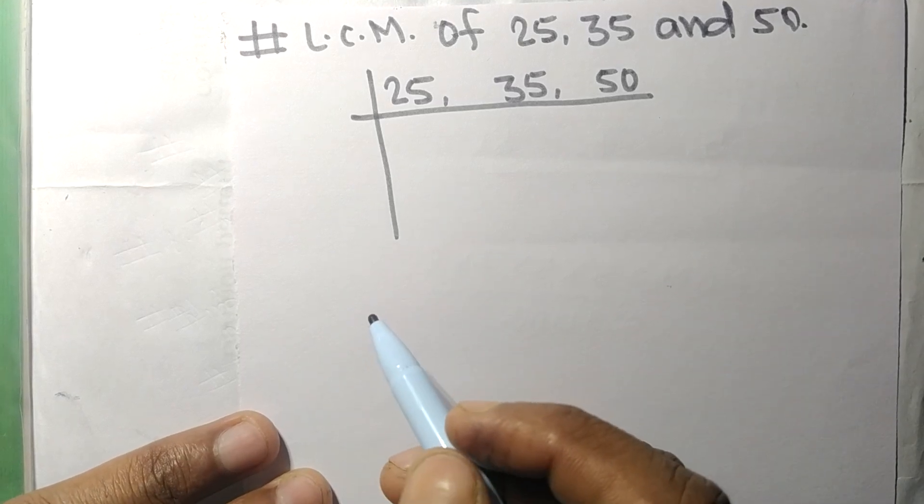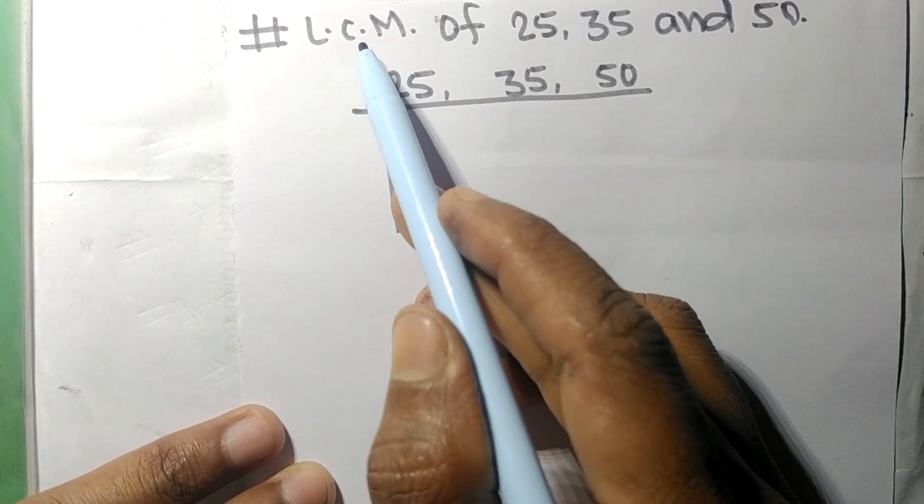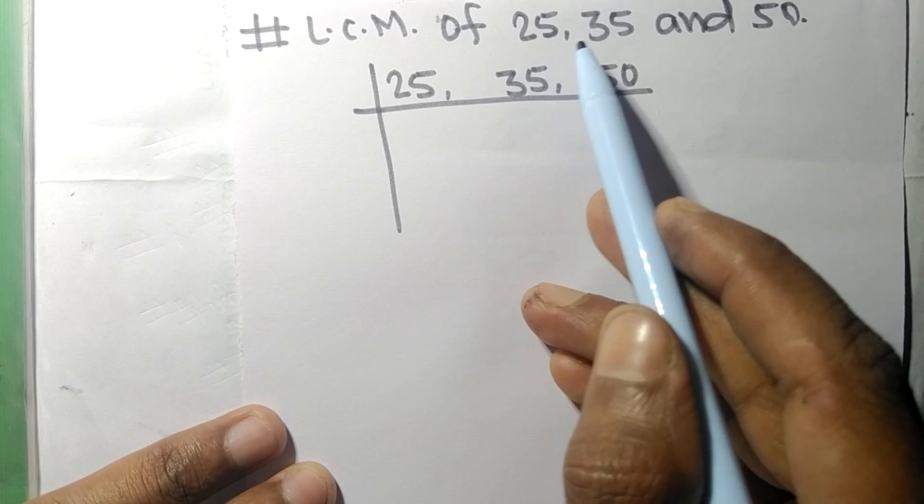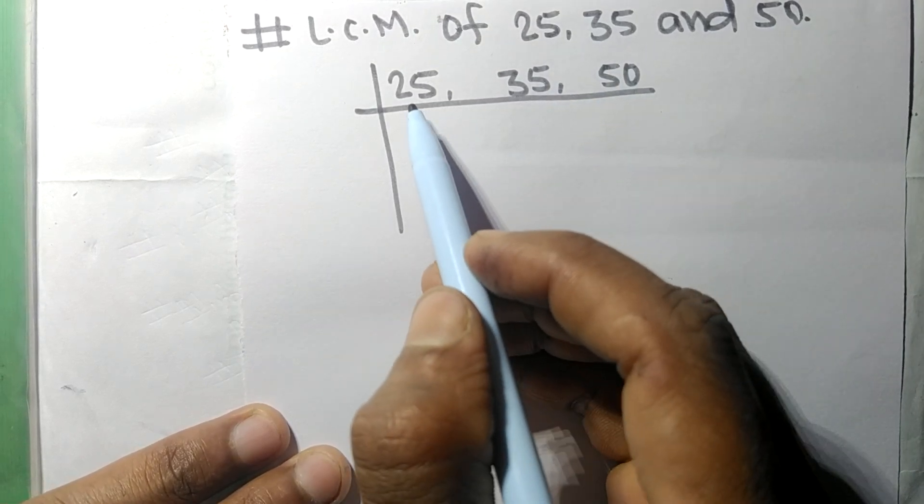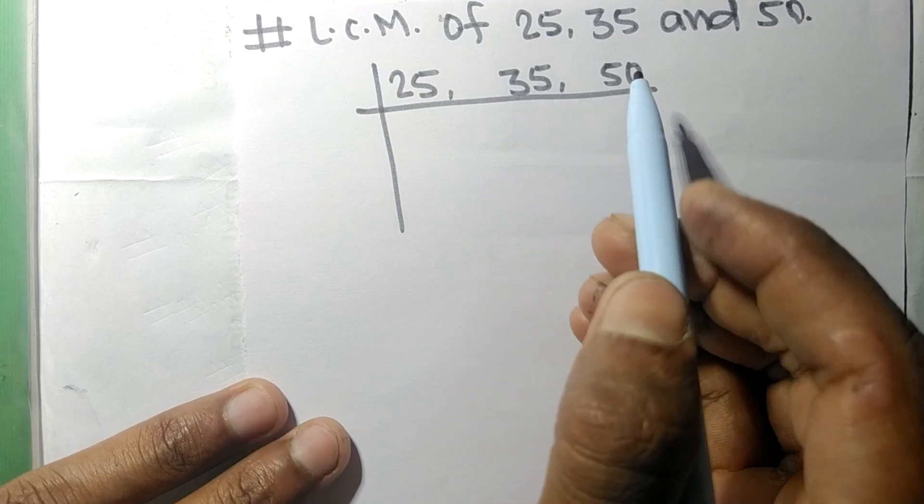So today in this video we shall find LCM of 25, 35, and 50. So these all numbers are divisible by 5.